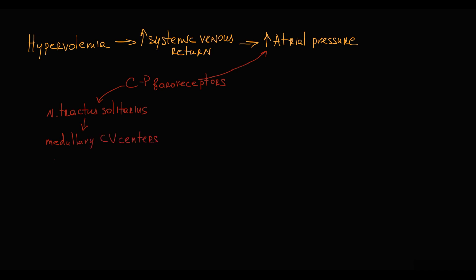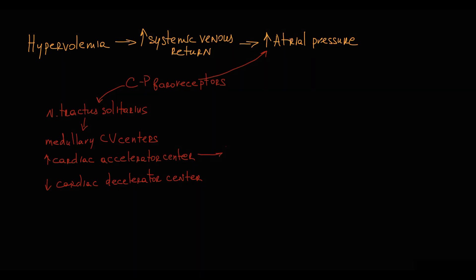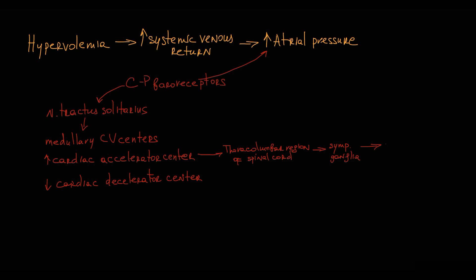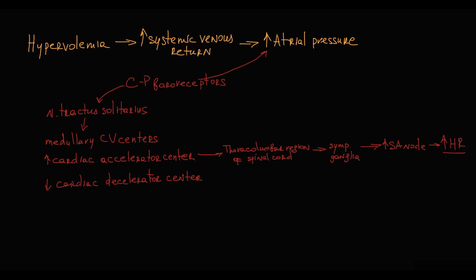In terms of Bainbridge reflex, it stimulates cardiac accelerator center and inhibits cardiac decelerator center. Cardiac accelerator center through sympathetic efferent neurons, that is usual sympathetic nervous system innervation initially synapses in thoracolumbar region of the spinal cord, then preganglionic fibers come to sympathetic ganglia, and from sympathetic ganglia, postganglionic neurons stimulate sinoatrial node, and this results in increase in heart rate.